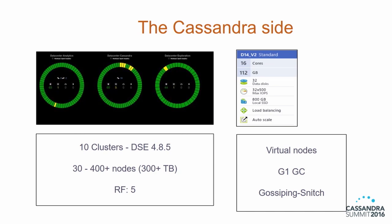All of our clusters typically have three rings — we call them analytics, Cassandra, and exploration. The analytics ring does the heavy Spark batch jobs. The Cassandra cluster does Spark streaming and also serves the REST APIs. The exploration cluster is used for ad hoc querying. We have around ten clusters, we run DSC 4.8.5, the biggest one has more than 400 nodes and holds 300 plus terabytes of data. The typical replication factor is five. Each node runs Ubuntu Linux 14.x, SKU D14 with around 100 gigs RAM and 800 gig SSDs. We use virtual nodes, G1 garbage collection, and gossiping property file snitch to be rack-aware.